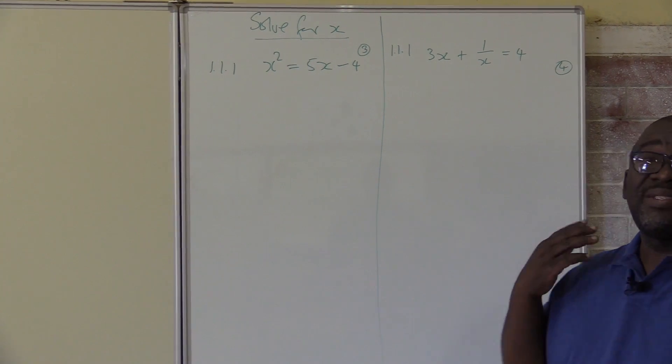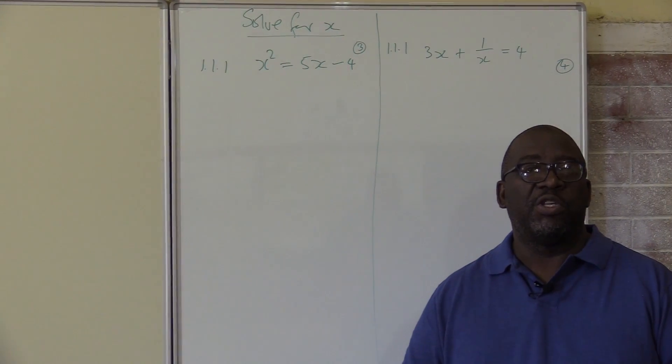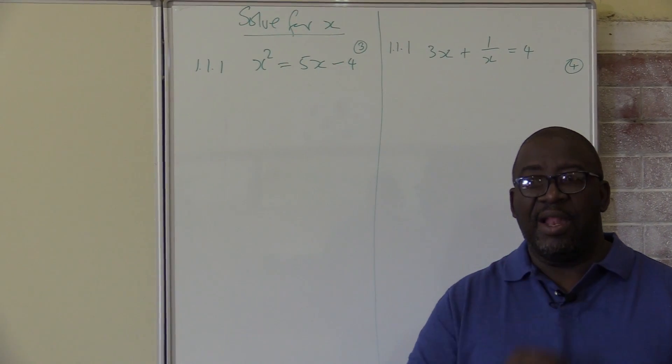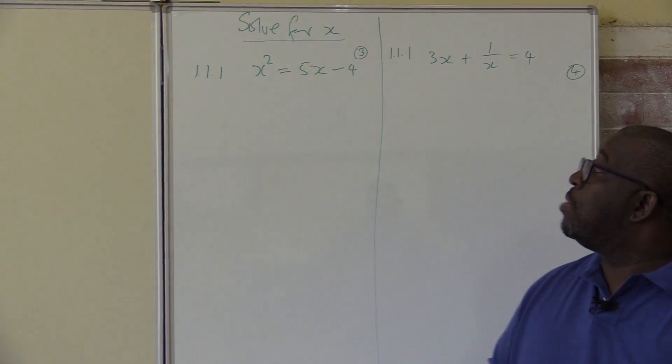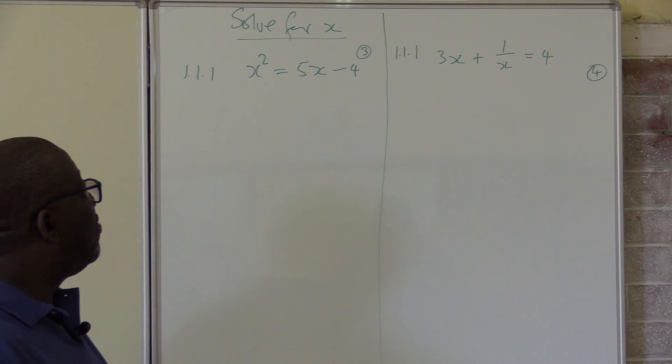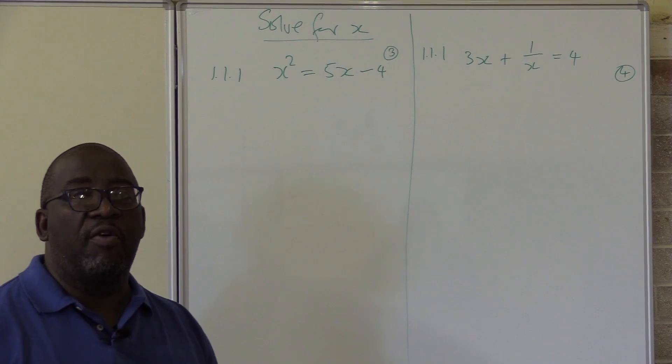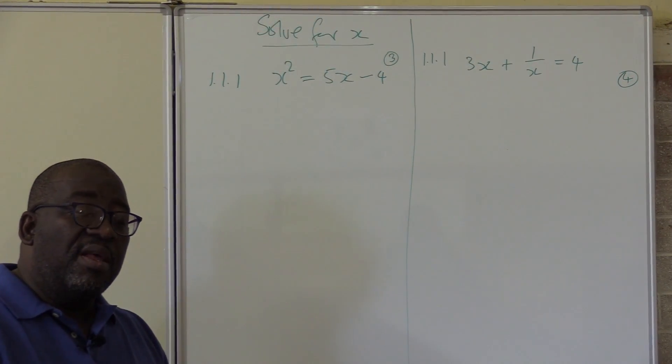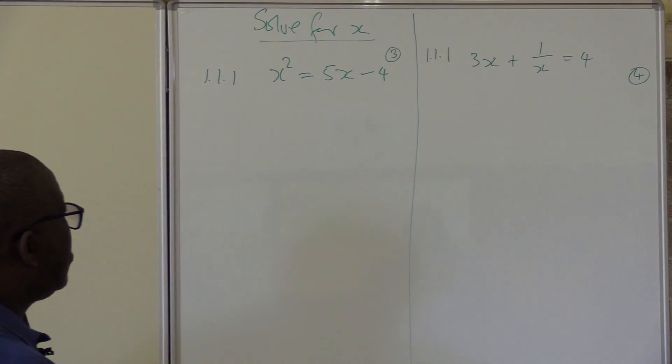Look at the first problem. These are all past exam question papers, so it is exactly like you'll be seeing in the exam. The first question I want us to look at is x squared equals 5x minus 4. The question will of course be saying solve for x.